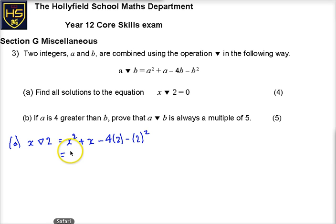So X triangle 2 is going to give us X squared, and it's really useful because I'm on my Mac and it keeps popping up with these interesting things at the bottom, really useful, plus X minus 8 minus 4, so it's minus 12.